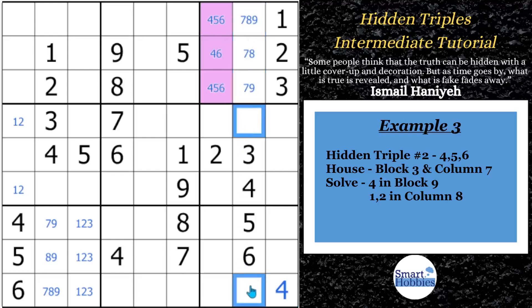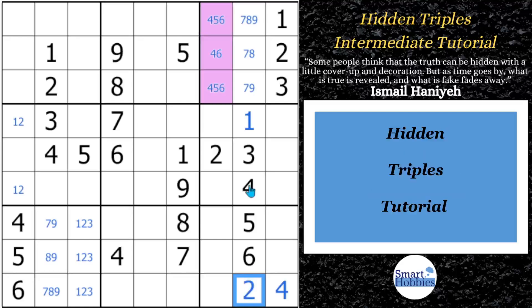The other thing this does is it allows us to put three candidates of a naked triple in column 8. And so now there's only two possibilities left in column 8, a 1 and a 2. And since we have a 2 right here, we can actually solve both of those cells. We know this has to be your 1, and that has to be your 2.